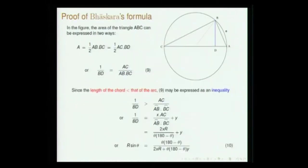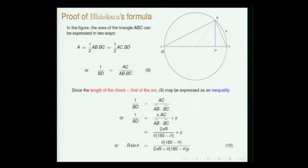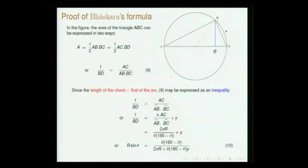There are two or three approaches presented by scholars. Here I present an approach based on geometry and analysis familiar to you by now. Consider triangle ABC. The area of this triangle can be represented in two ways: one is (1/2) × AB × BC, and the other is AC × BD. From this, 1/BD = AC / (AB × BC). You know that the length of the chord is always less than that of the arc. The sine function is basically finding the relation between chord length and arc length — that is all the sine function is about.